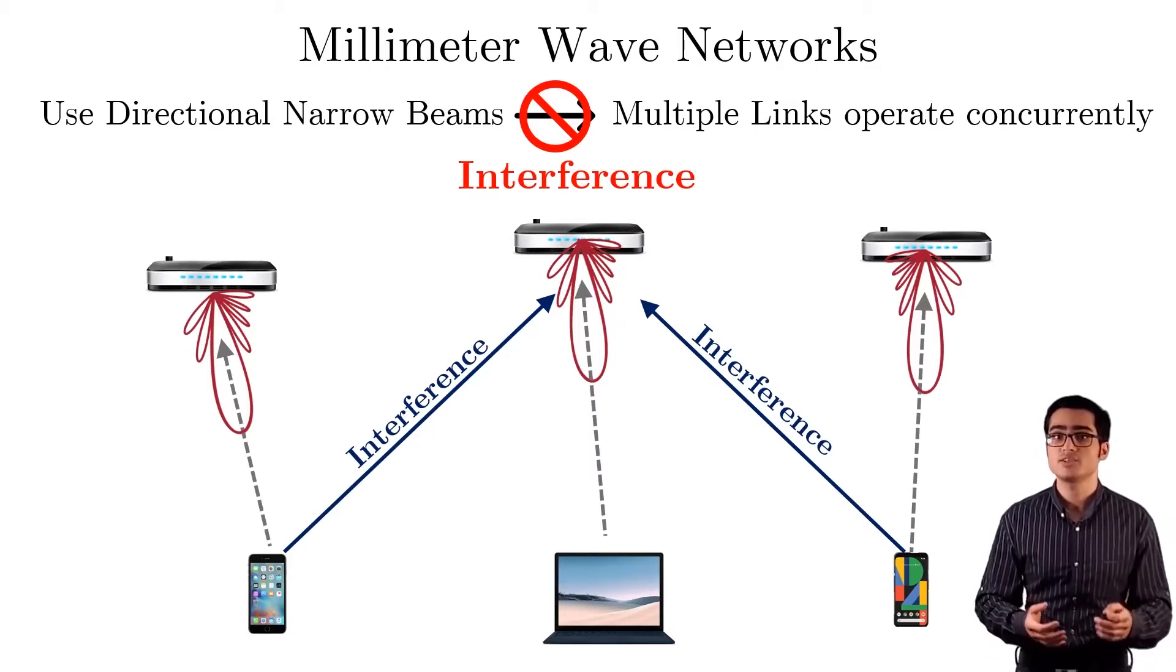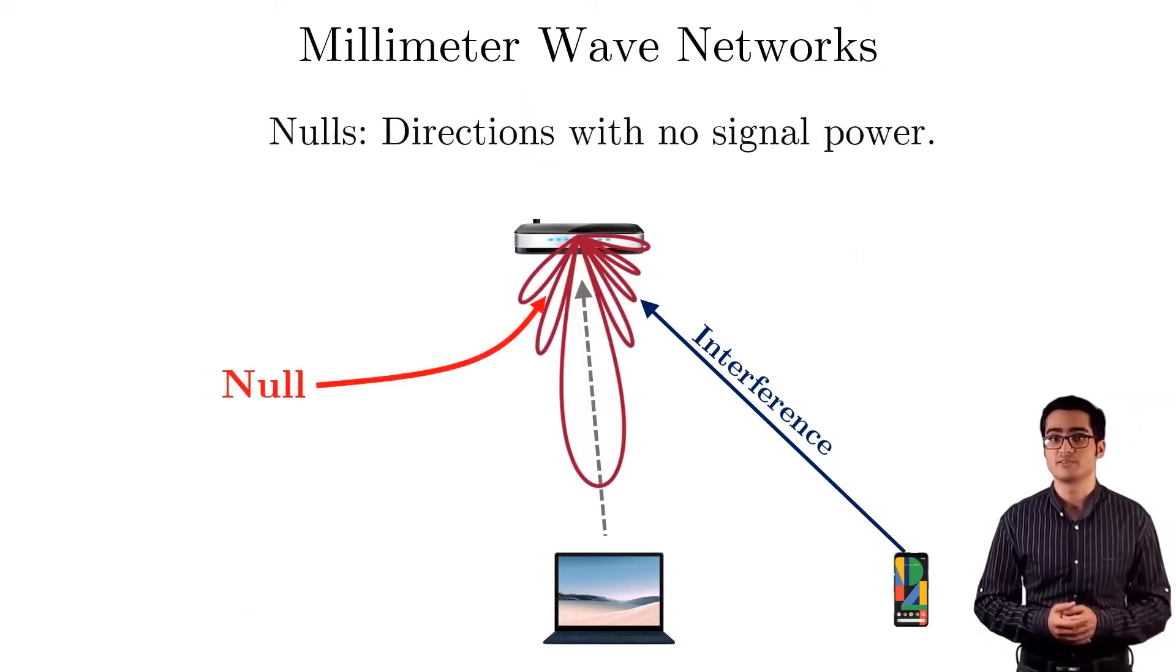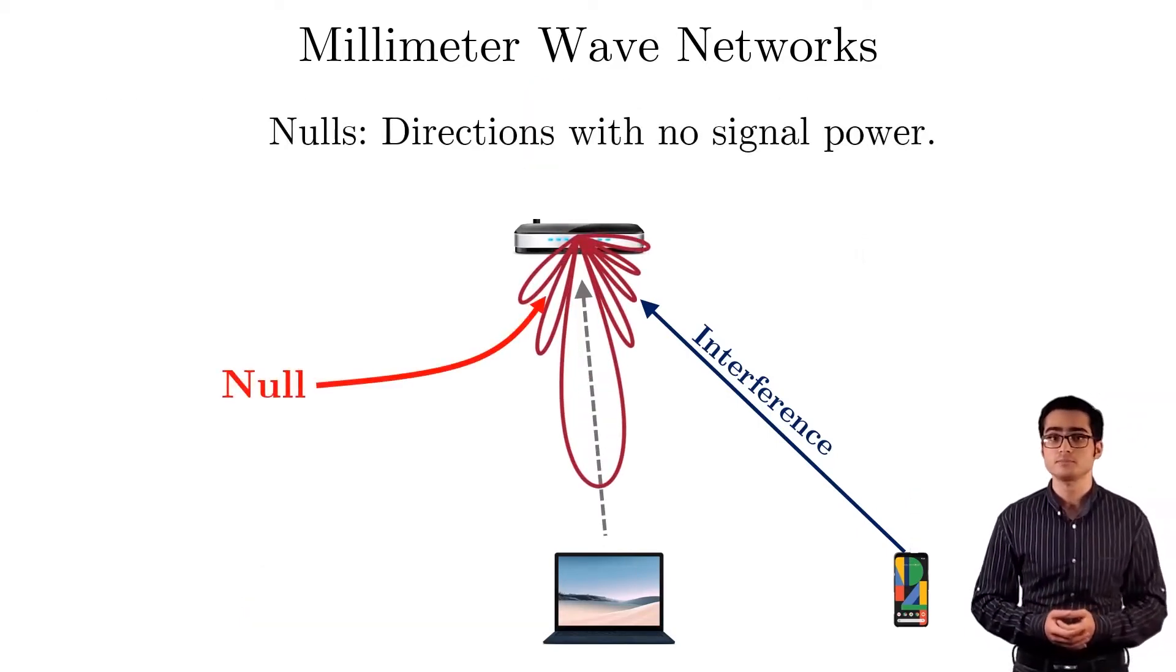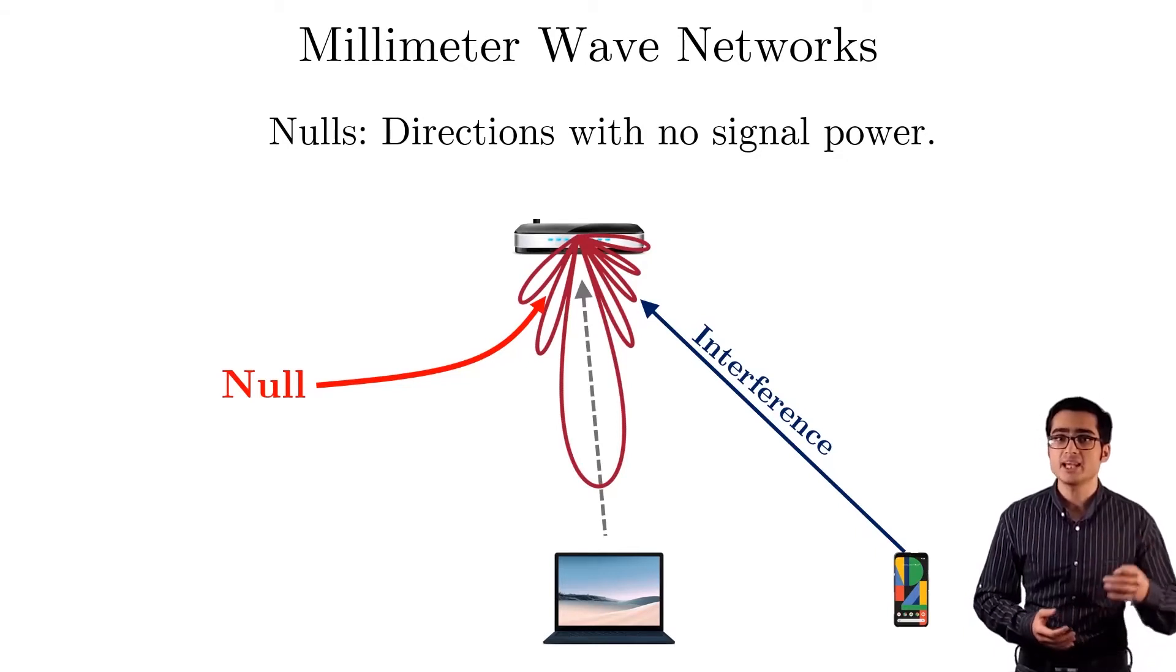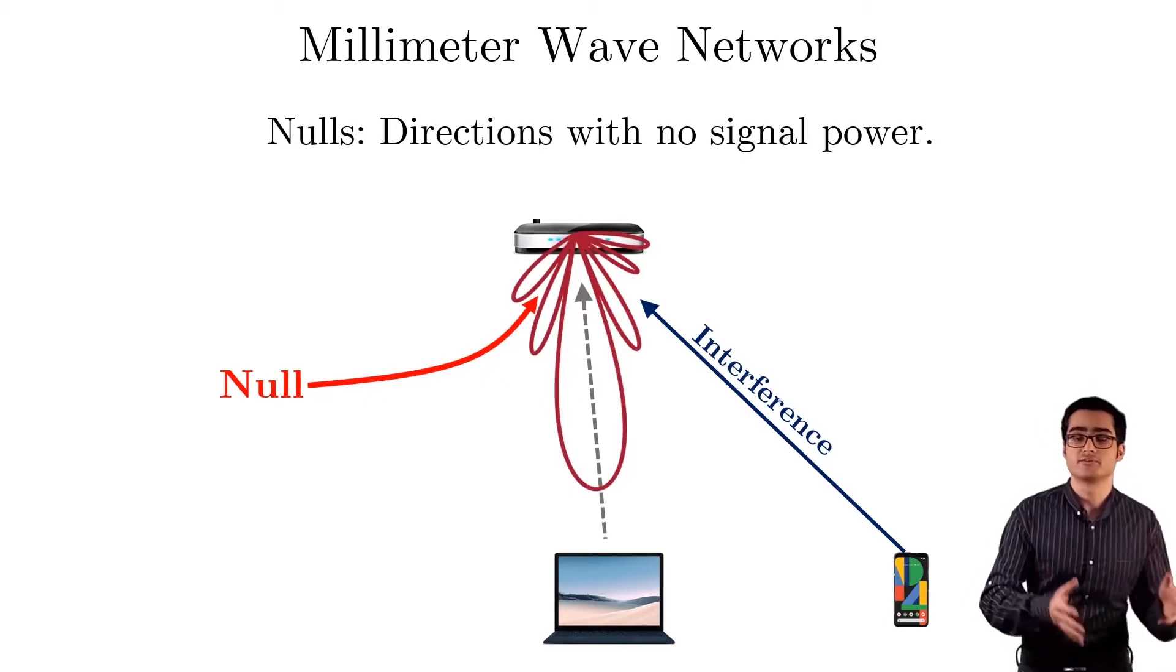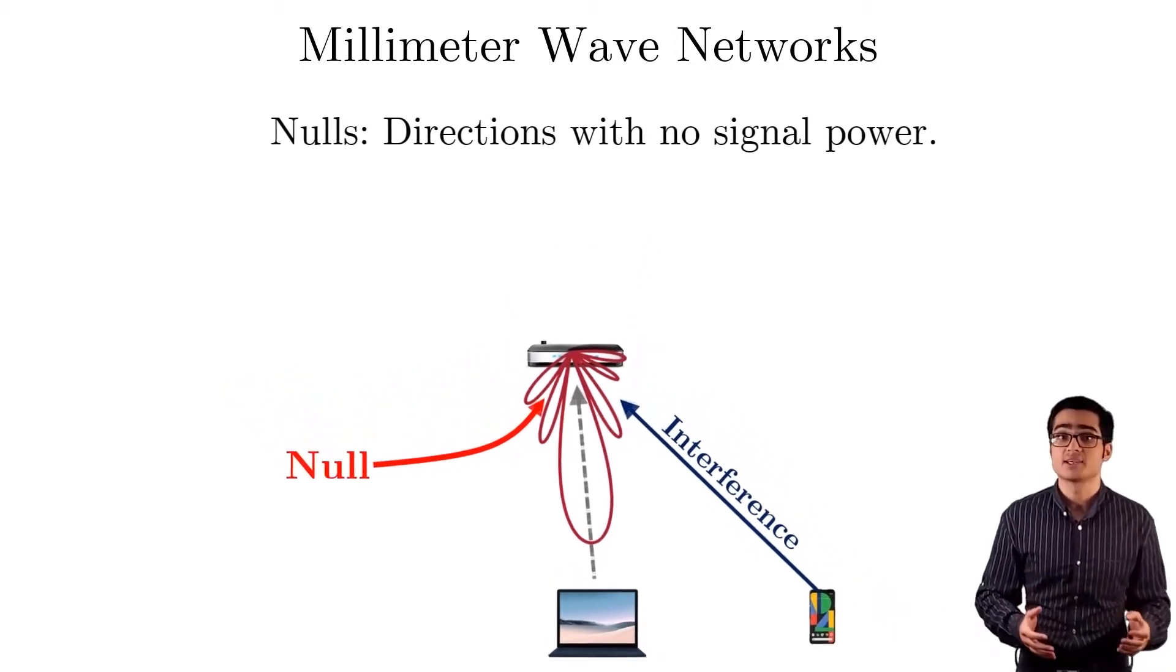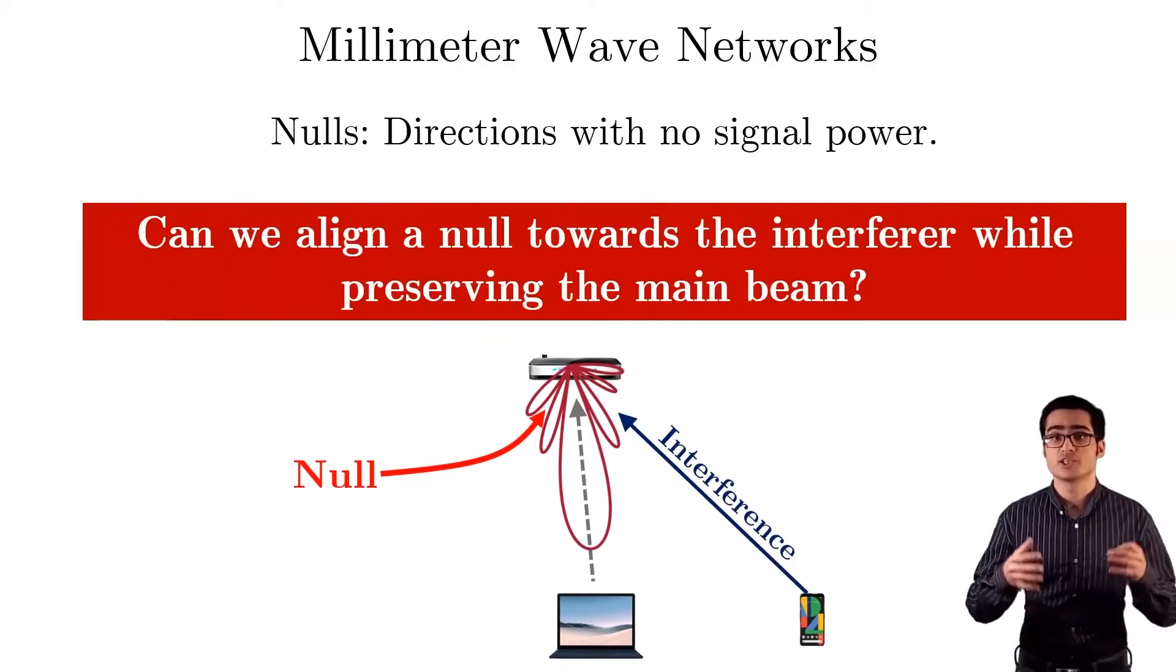At the same time, we notice that the beam pattern has nulls, directions where no power is received, like this one. Now, if we create a null in the direction of the interferer, we can actually suppress the interference. In this paper we ask, can we align a null towards the interferer while preserving the main beam?